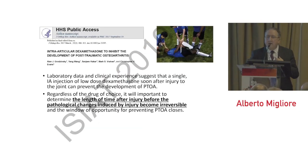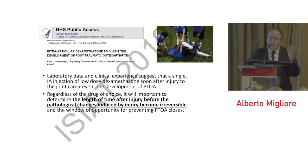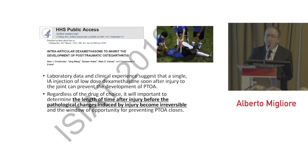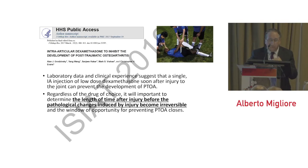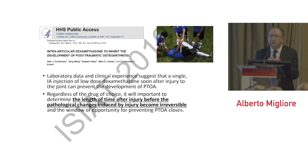Regarding post-trauma, especially for sport medicine, an interesting paper discusses intra-articular dexamethasone to inhibit the development of post-traumatic osteoarthritis. Laboratory data and clinical experience suggest that a single intra-articular injection of low-dose steroid, dexamethasone, soon after joint injury can prevent the development of post-traumatic OA. Regardless of the drug of choice, it is important to determine the length of time after injury before pathological changes become irreversible — identifying the window of opportunity for preventing post-traumatic osteoarthritis.